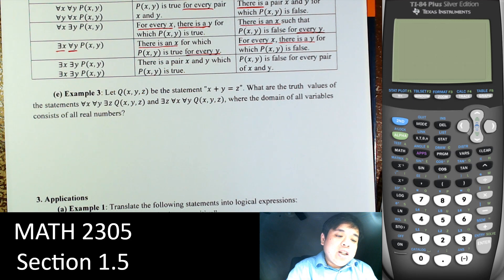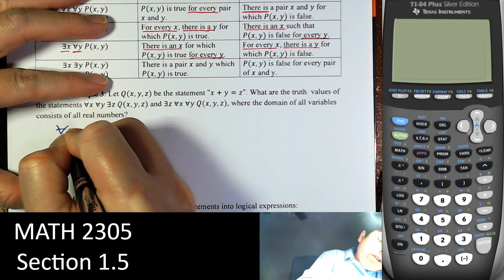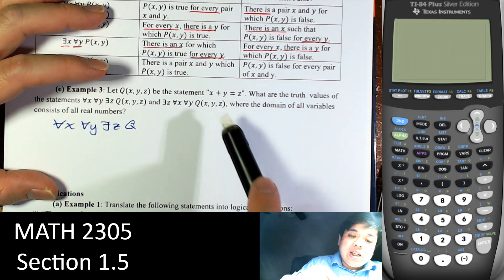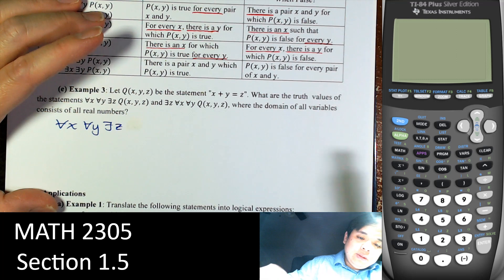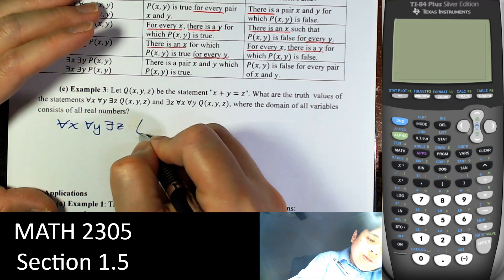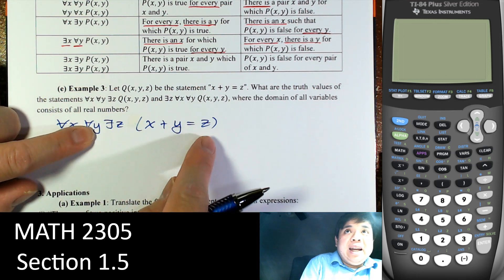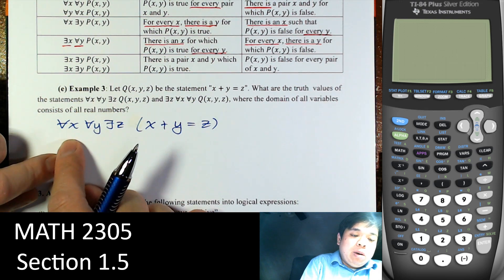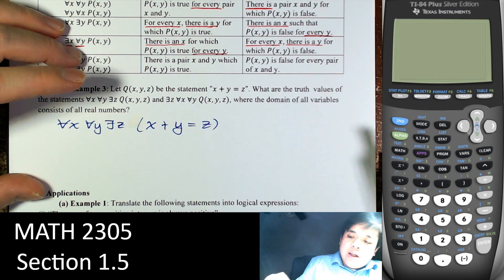Let Q(x,y,z) be the statement x plus y equals z. What are the truth values? For every x, for every y, there exists a z such that Q(x,y,z). We can choose any x and any y, and then choose z to equal x plus y. A real number plus a real number is a real number, so we can always find a z to make this work. So this statement is true.